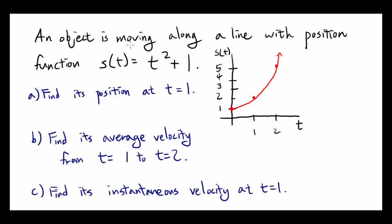An object is moving along a line with a position function S(t) = t² + 1. I've graphed the position function right here. At time equals 0, the object is at 1. At time equals 1, it's at 2. At time equals 2, it's at 5. You can see the graph is a parabola that's going up.